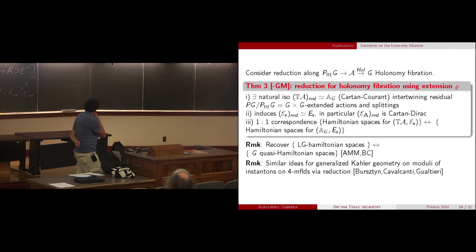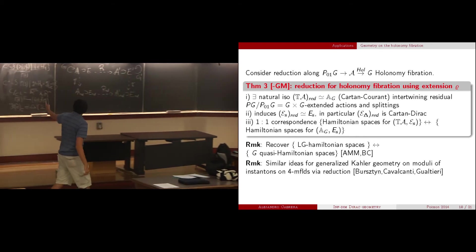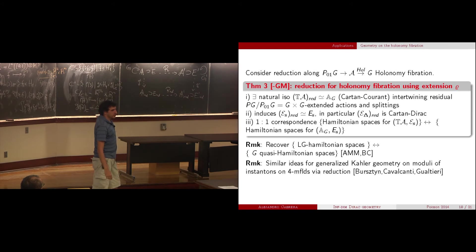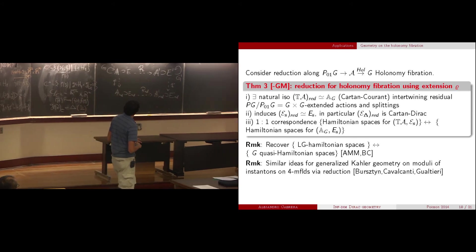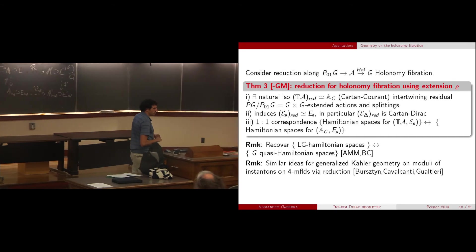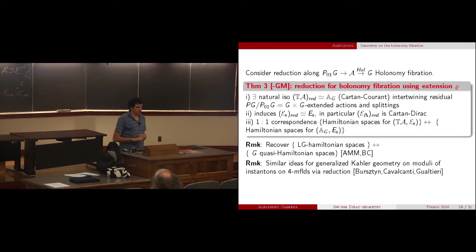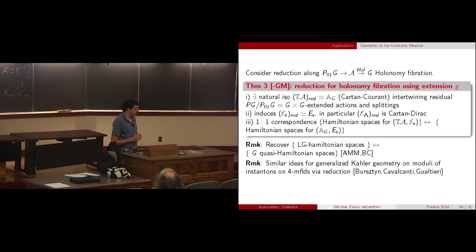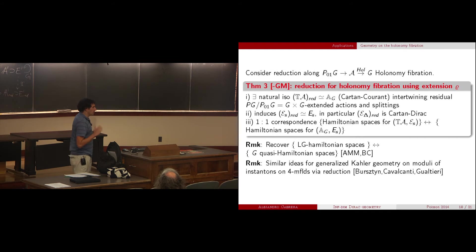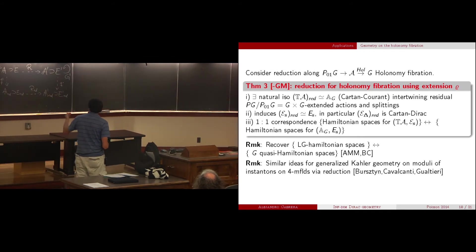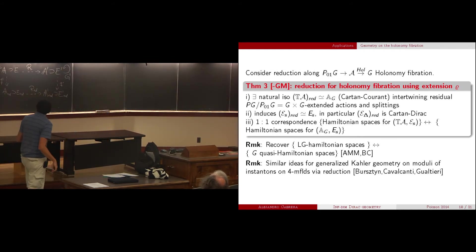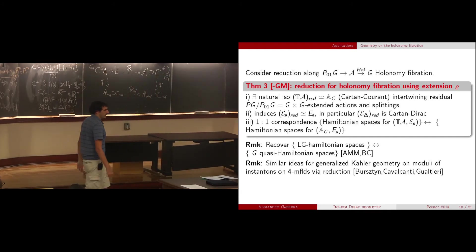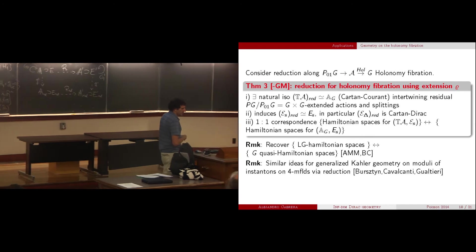I also want to say that viewing differential operators as Dirac structures is also something that other people have considered. In particular, in the context of geometric mechanics and control theory, the group of Marsden has several papers, and they also consider reduction procedures. What is a bit different here is that after reduction we get non-linear spaces — a Lie group — whereas in their cases they were mostly linear spaces.